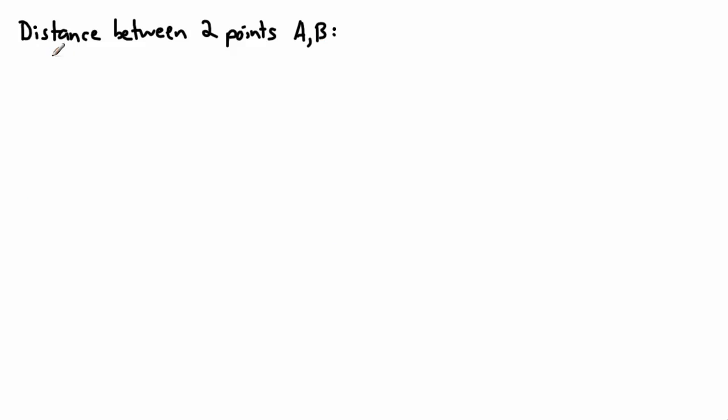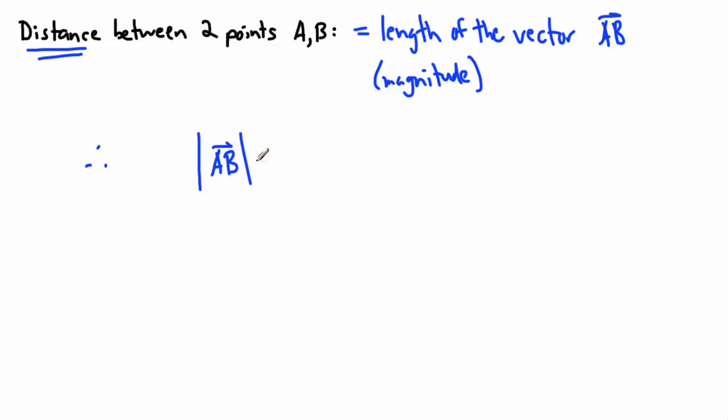Maybe more useful than that is finding the distance between two points. That's going to be really easy - just the length of the vector. Remember, length means magnitude, the magnitude of vector AB. So the distance between them is this. That's how we write it. That's how we do a magnitude. This is how we define the vector between two points and find the distance. The distance equals the magnitude, or length, of that vector AB.